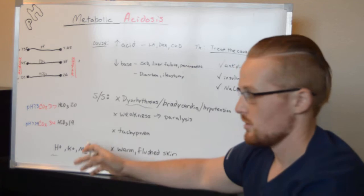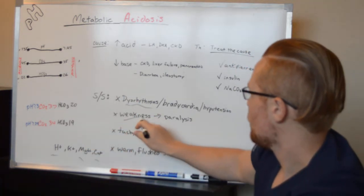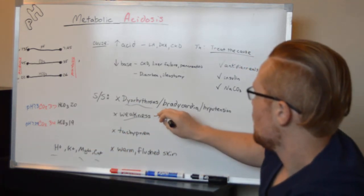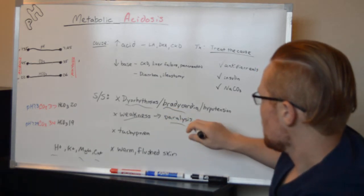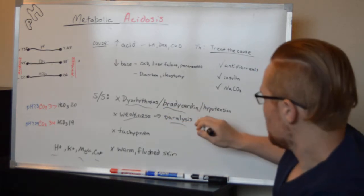If you have too many depressants, you're going to have weakness leading to paralysis. Your heart's going to be weakened, leading to bradycardia and decreased cardiac output, leading to hypotension.